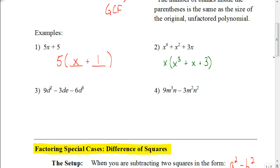Now let's look at this next one. This next one is 9d squared minus 3de minus 6d cubed. Let's start by looking at the numbers, the 9, the 3, the 6. The greatest common factor between those is 3. That means that the largest number that divides evenly into each of those is 3. Now I look at the variables. The largest variable with an exponent that they all have in common is just a d.